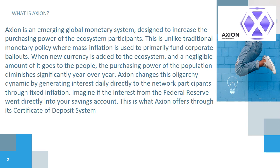Axion changes this oligarchy dynamic by generating interest daily directly to the network participants through fixed inflation. Imagine if the interest from the Federal Reserve went directly into your savings account. This is what Axion offers through its certificate of deposit system.